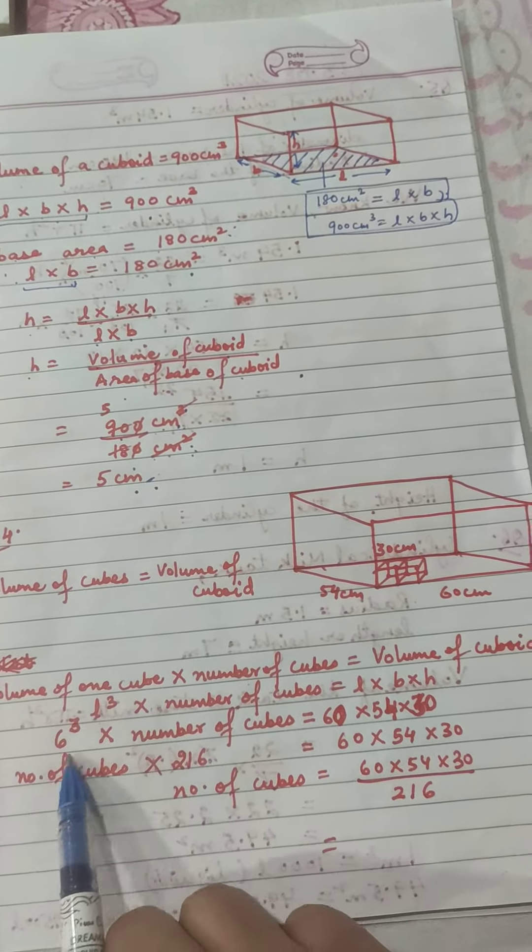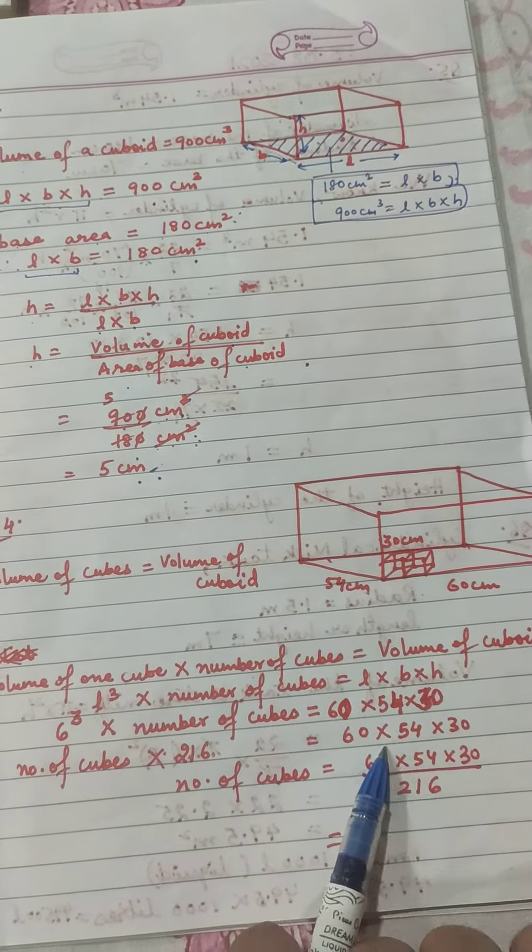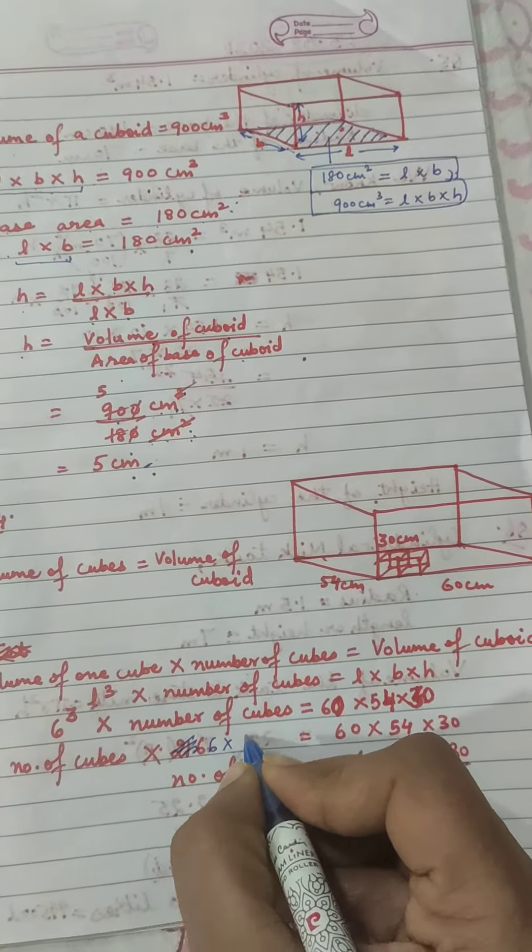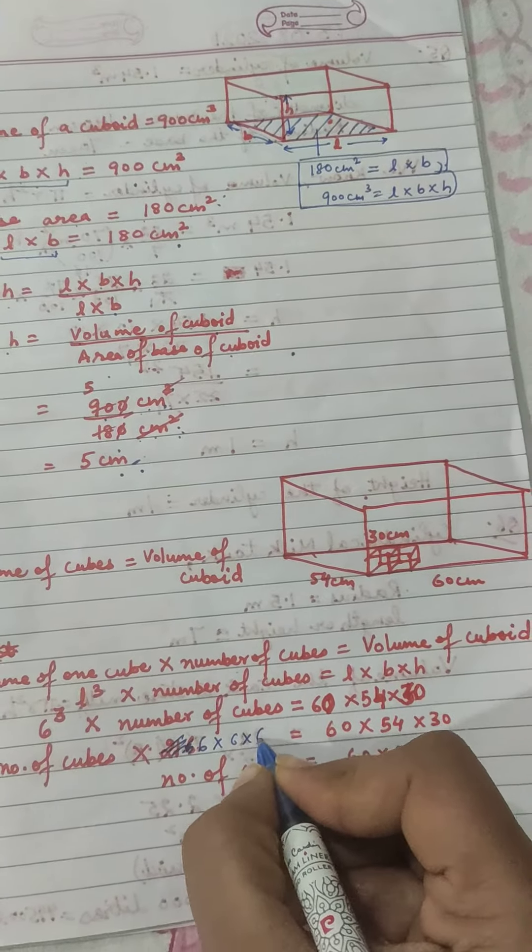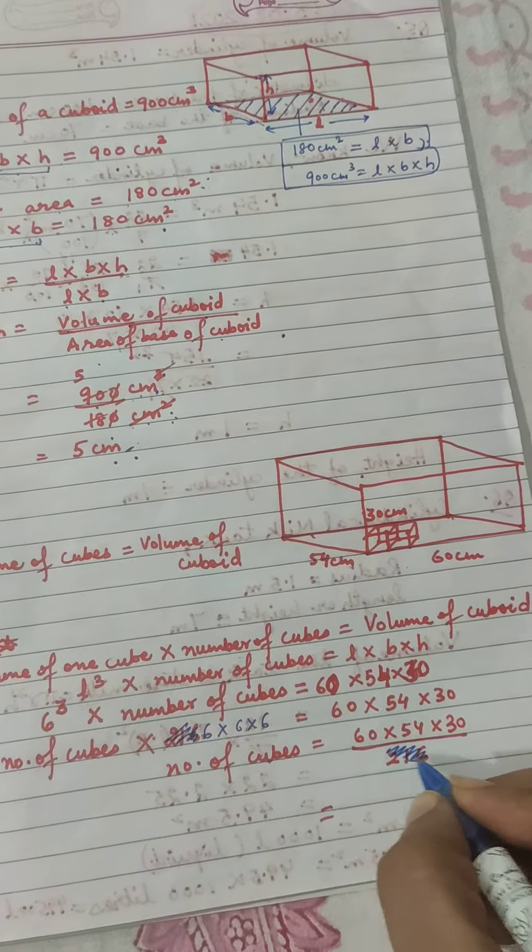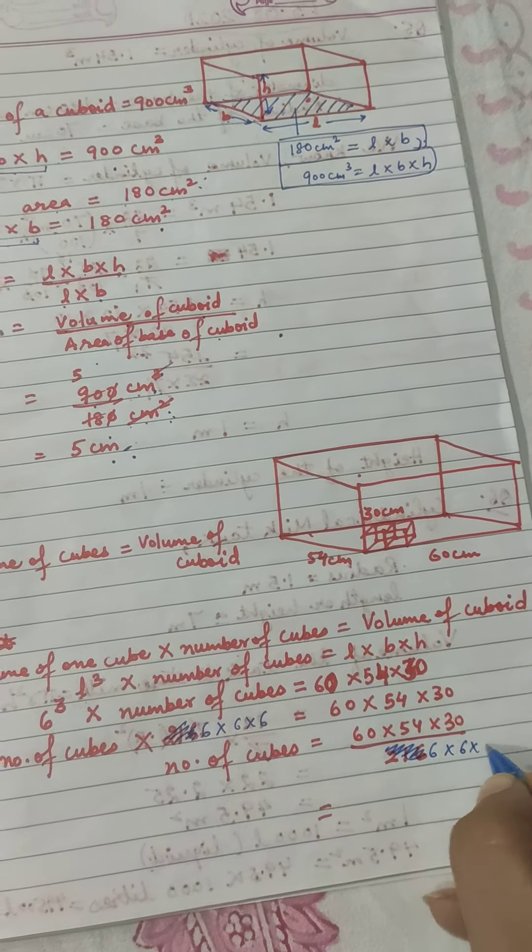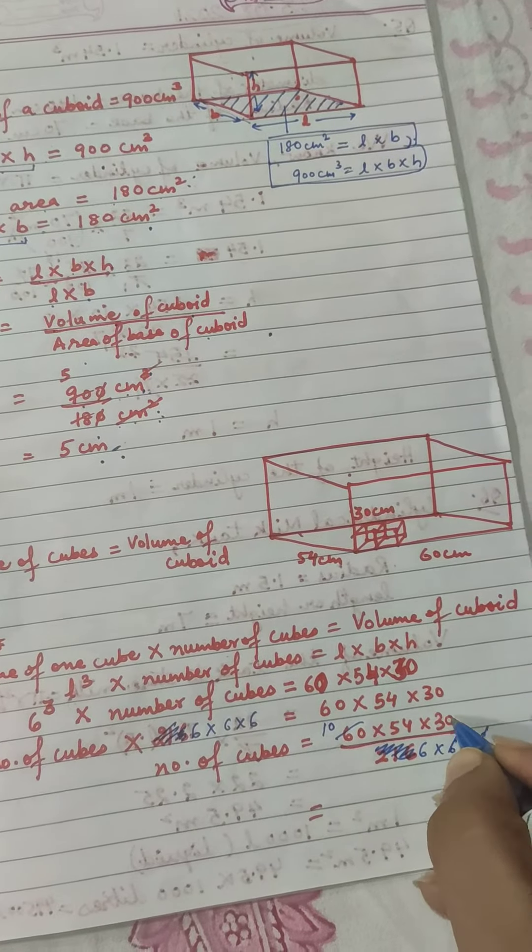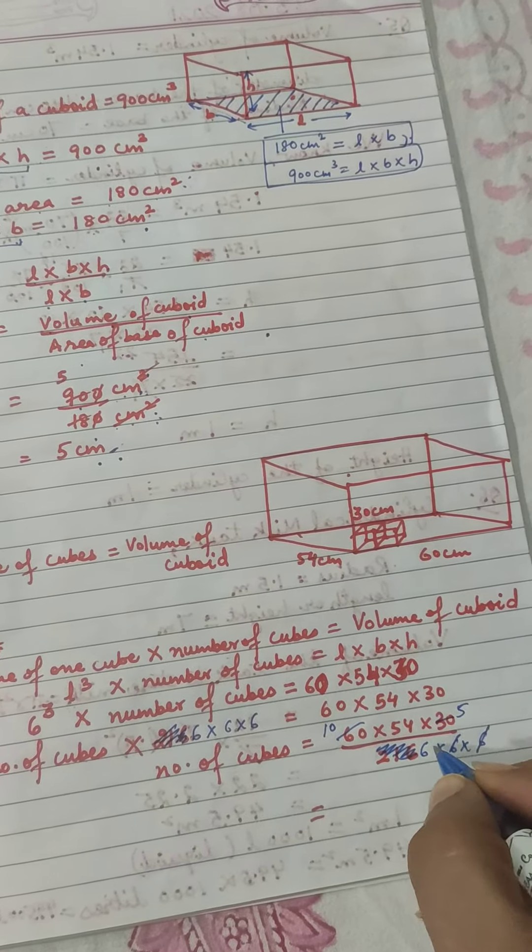6×6×6 equals 216. You should keep it as 6×6×6, that's better because it will be easier to cancel. Now how will you cancel it? This becomes 10, cancel this 6 with that, and this 6 with that. So we have 10×9×5.